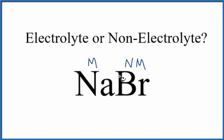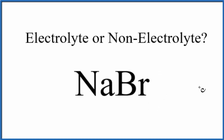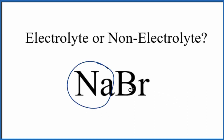When we have an ionic compound, we expect that it might be an electrolyte. That means when we put NaBr — solid sodium bromide — in water, it's going to dissolve and dissociate into its ions, making it an electrolyte, and the solution would conduct electricity. If we know our solubility rules, sodium compounds are very soluble, so we expect that this would dissolve in water and dissociate into its ions.